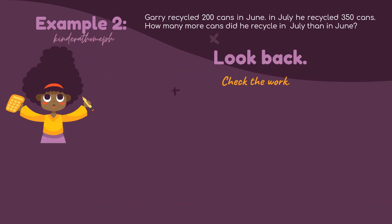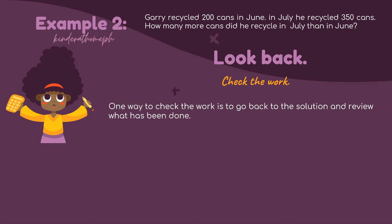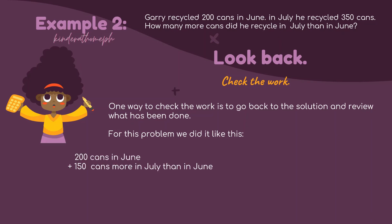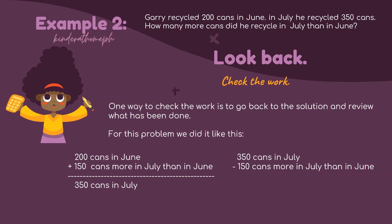Let us check our work. The opposite of subtraction is addition. We add 200 and 150 — we must get the number of cans recycled in July. 200 plus 150 is 350. We did get the number of cans in July. Now, let us try subtracting 150 from 350 — we should get the number of cans recycled in June. 350 minus 150 is 200, which is the number of cans in June. Hooray!